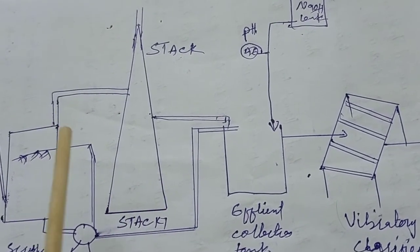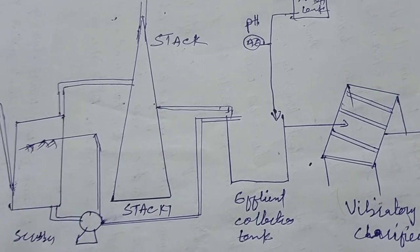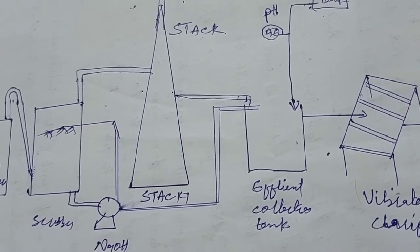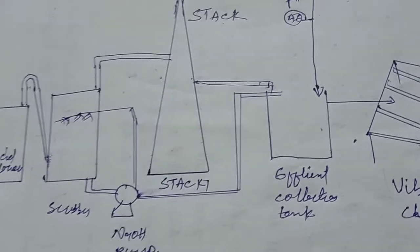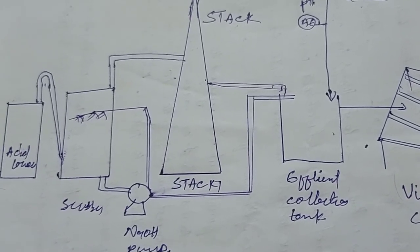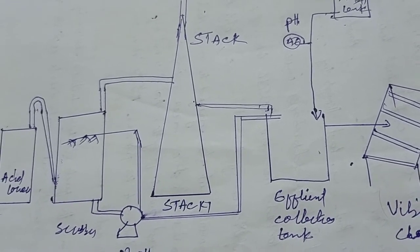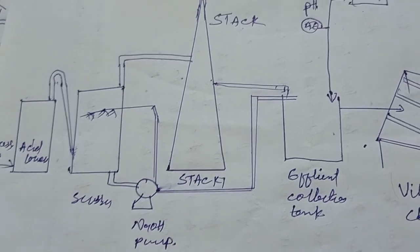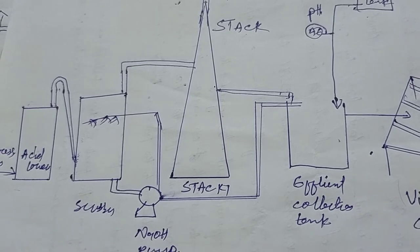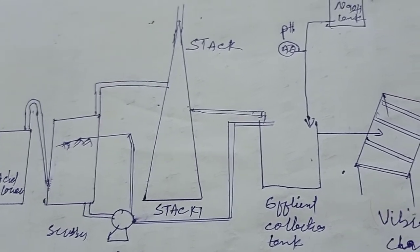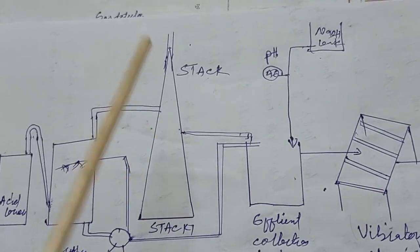Generally in all industries we keep the stack at a high level because the gas will dilute in air easily. If we discharge at the bottom, it will remain concentrated near ground level. The exit gas from the stack mainly contains trace amounts of SO2 and SO3, and inert gases. Oxygen is consumed in the furnace and converter. If oxygen-depleted air is released nearby, people may feel difficulty breathing. The air will also have acid mist, which is why the height of the stack should be more.